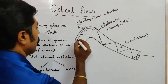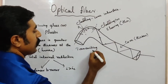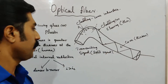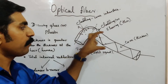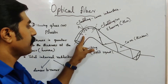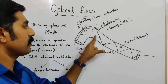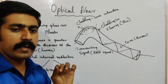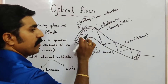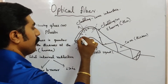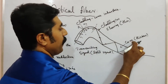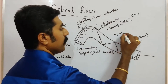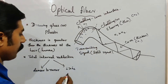The transmitting signal is nothing but a light signal. This is used for communication purposes — transmitting video signals. When signals reflect fully under the condition of light travelling from denser to rarer, the core is denser with a greater refractive index. N1 is the refractive index of the core and N2 is the refractive index of the cladding.